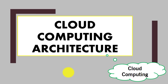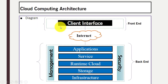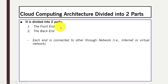Hello, in this video you will learn what is cloud computing architecture. Cloud computing architecture is divided into two parts: the front end of the cloud and the back end of the cloud. Both front end and back end are connected with each other through internet, or you can say a network.